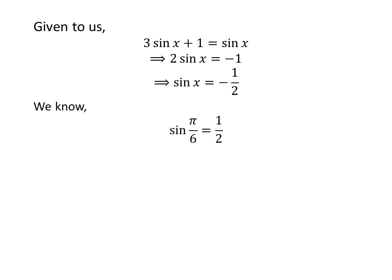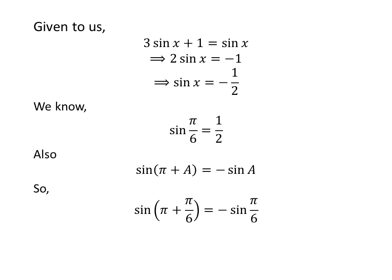We know the value of sin of pi upon 6 is half. We also know the trigonometric identity sin of pi plus a is equal to minus sin of a. Applying this identity, sin of pi plus pi upon 6 equals minus sin of pi upon 6. Since pi plus pi upon 6 equals 7 times pi upon 6, and plugging in the value of sin of pi upon 6 gives us sin of 7 times pi upon 6 is equal to minus half.